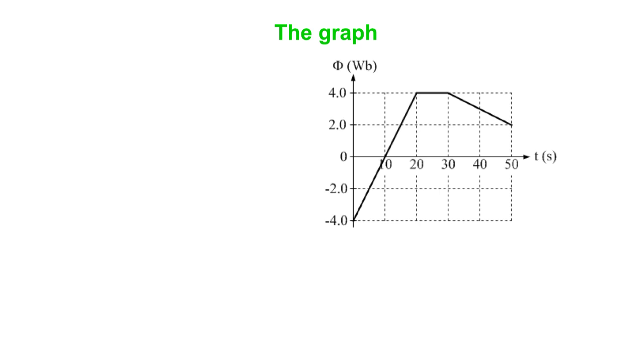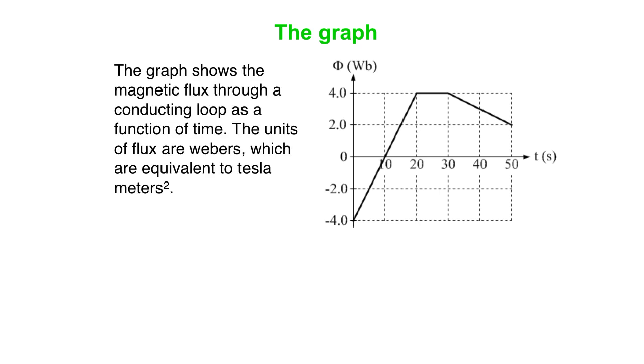So we'll just do an example. Here is our graph, flux on the vertical axis, time on the horizontal axis. This shows the magnetic flux through a particular conducting loop as a function of time. Note that the units are Webers, which is absolutely equivalent to Tesla meters squared.